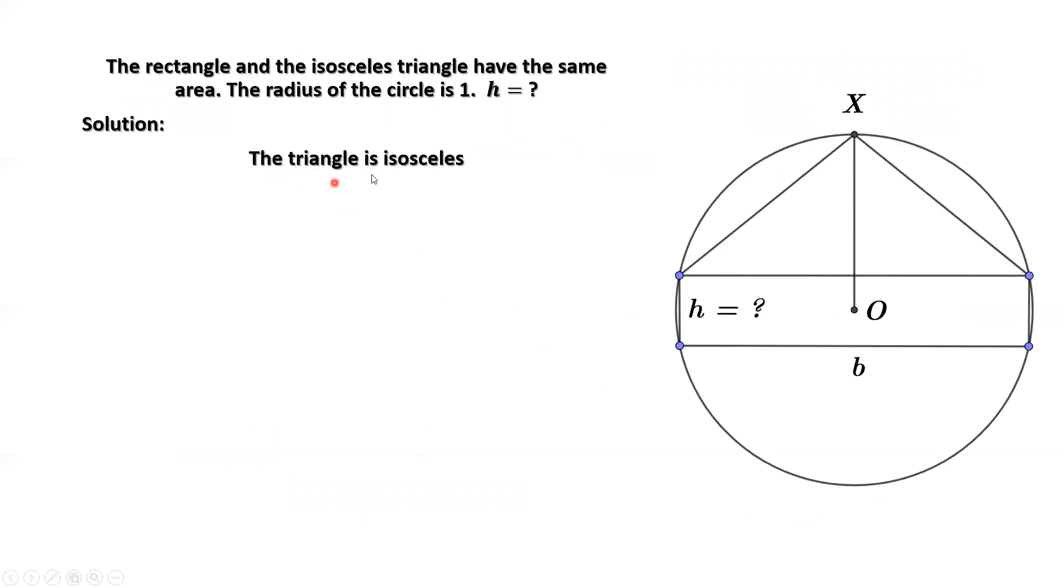Because the triangle is isosceles, then we have the height of this triangle equals one minus half h. From here, o to x is the radius of this circle, which is given. The value is one. The point o is the center of this circle. From point o to the top base of this rectangle is half of the edge. Therefore, the height of this isosceles triangle is one minus half h.